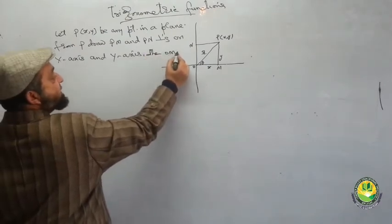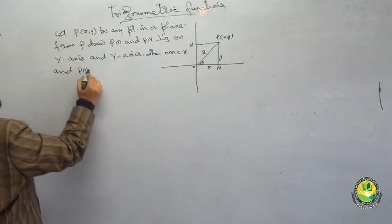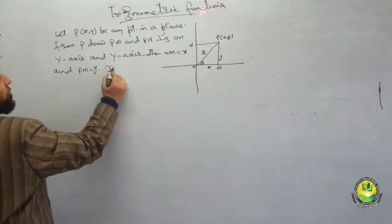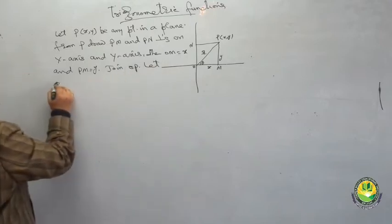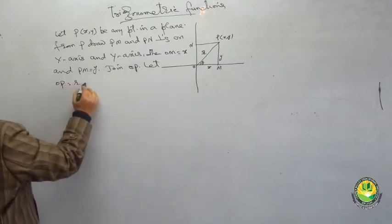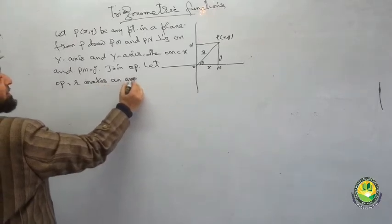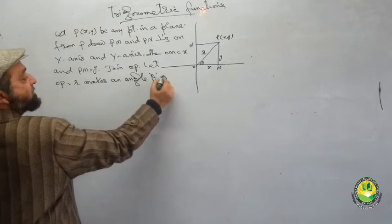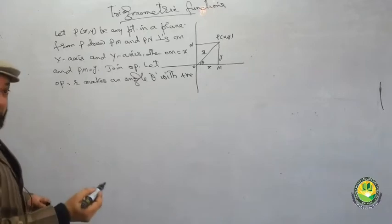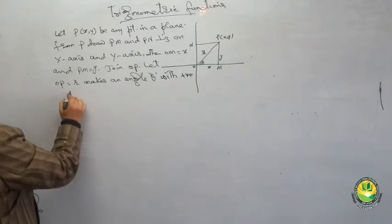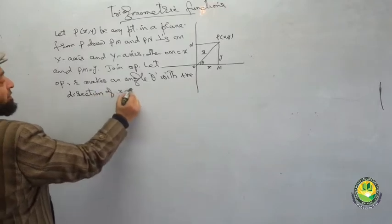OM is equal to x and PM is equal to y. Join OP and let OP equal r. OP makes an angle theta with the positive direction of the X-axis.